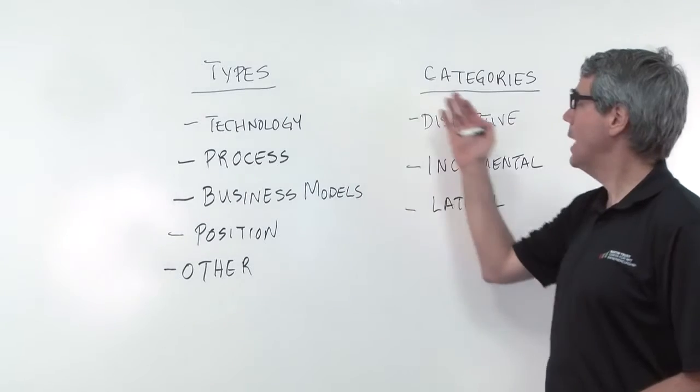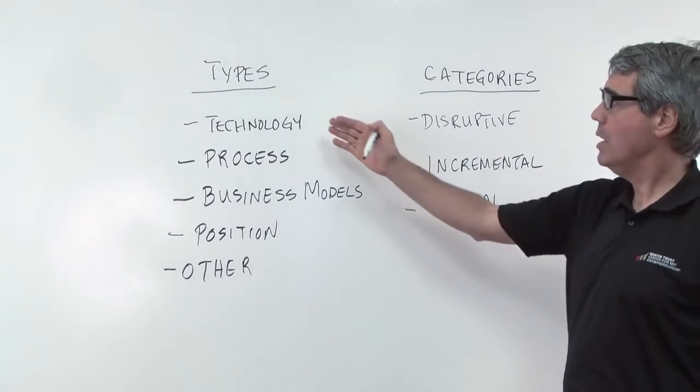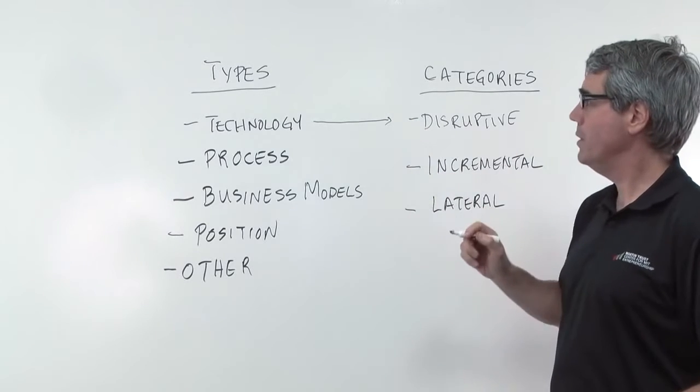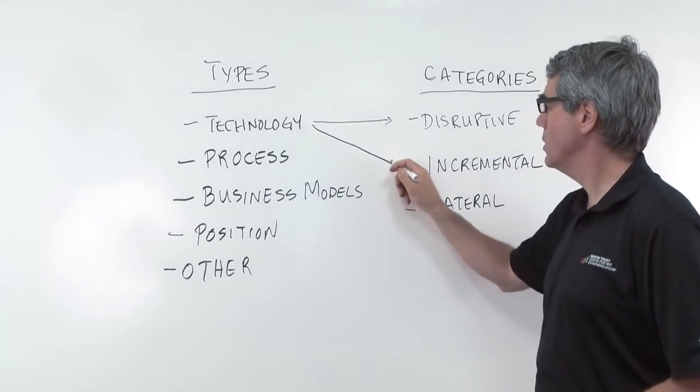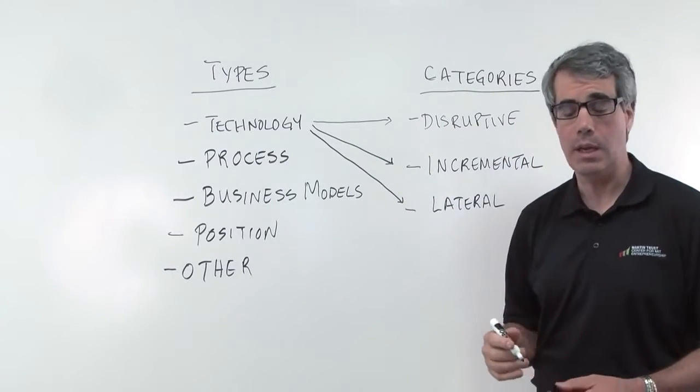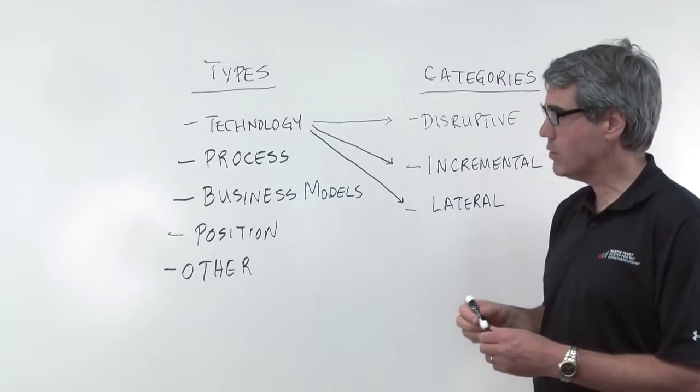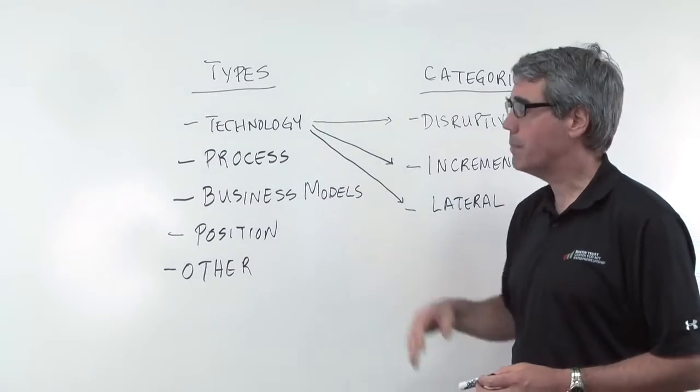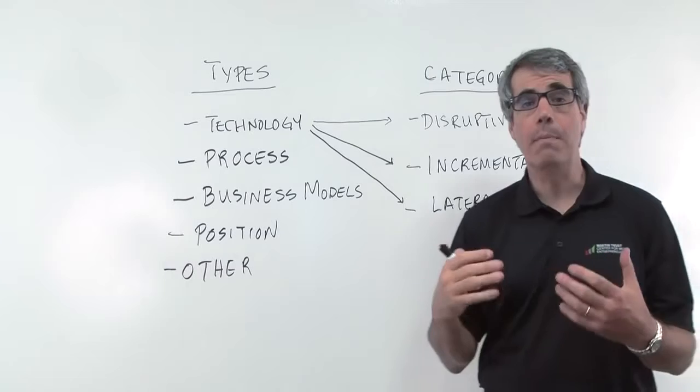Now, why do I have types and categories? Because in this case, you could have a technology that was disruptive innovation. You could have a technology that's incremental, or you could have a technology that's already worked in another industry and you bring it in. So really what you have is a matrix where you have three different categories for each type and there could be more.